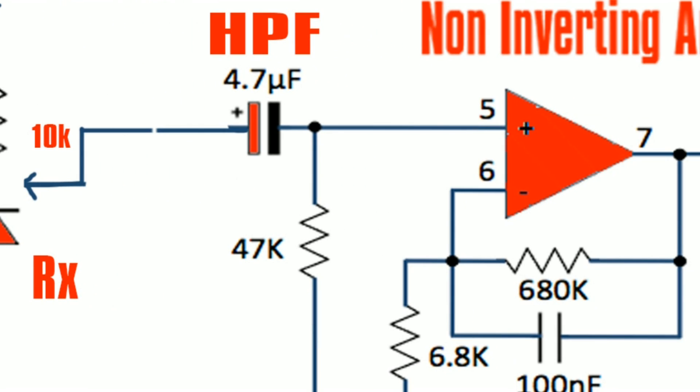Then connect the high pass filter with the help of a 4.7 microfarad capacitor and 47 kilohm resistor.